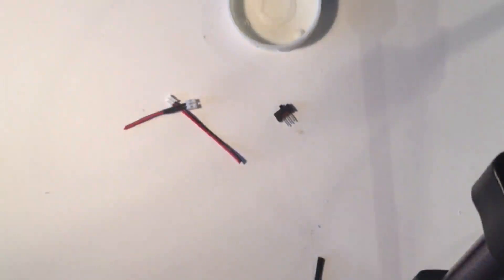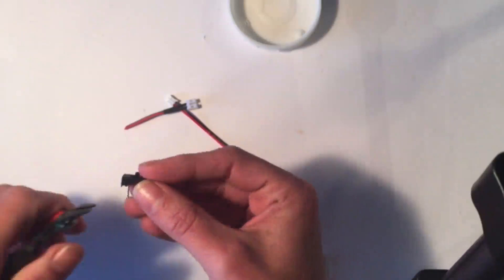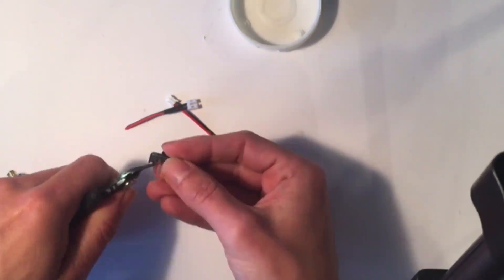Trim your battery extension cable to a few inches and trim off one of the outside legs from your on-off switch.